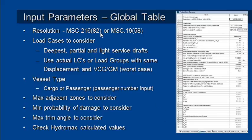Our first decision is which design code we're going to use — Resolution 216 or 19 — and from those codes we need to define a series of drafts: our deepest, partial, and light service drafts. We can do that in two ways: define regular load cases with loads and tanks, or define load groups which don't contain any tanks and fluids but allow us to directly specify the displacement and VCG to produce the required GM for those three draft conditions.